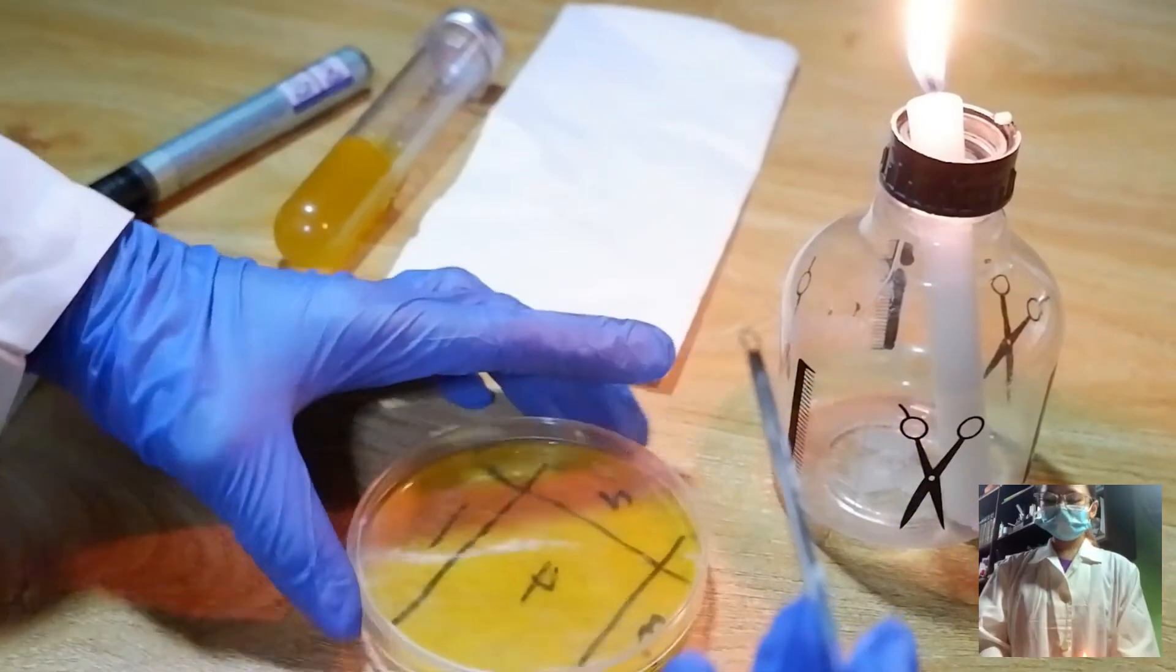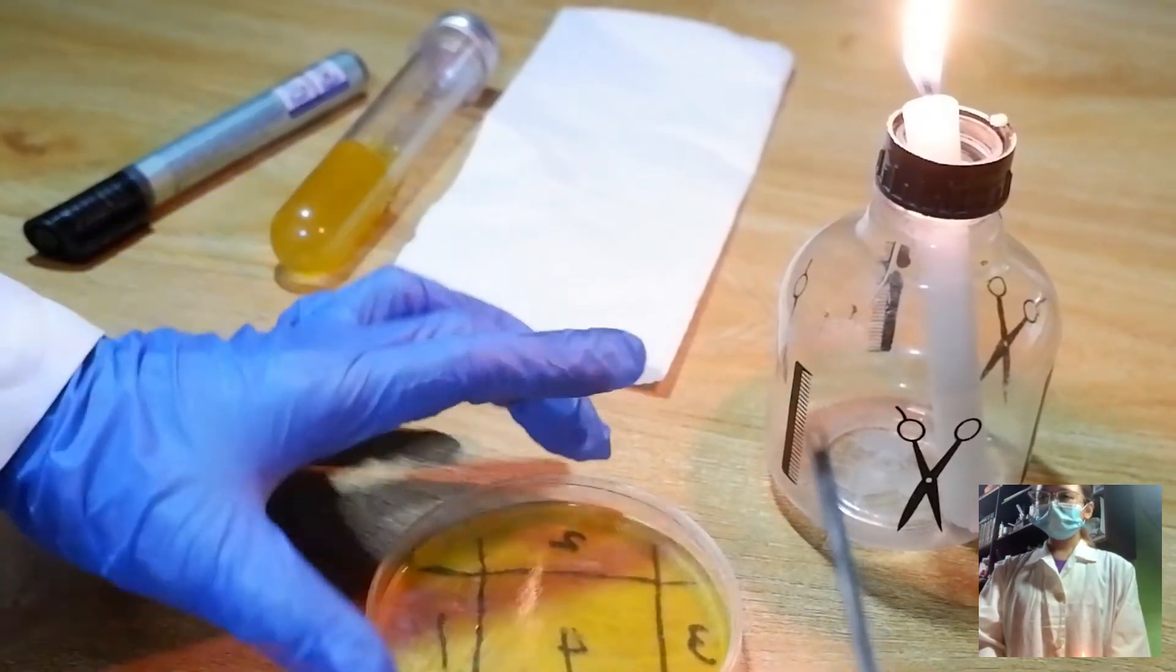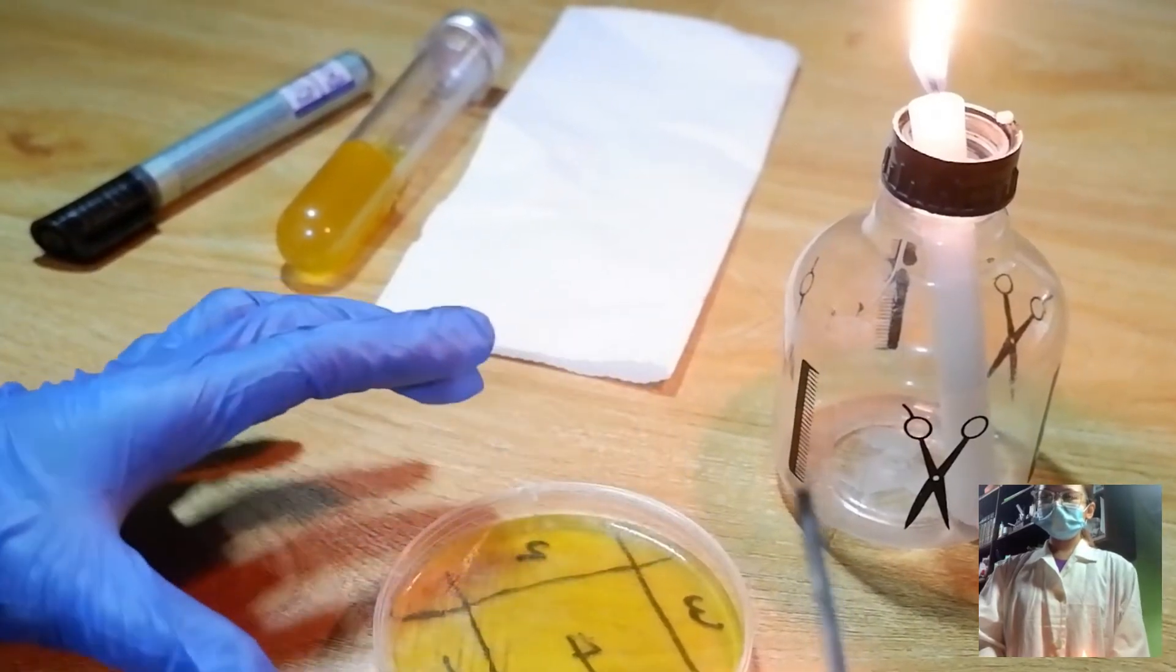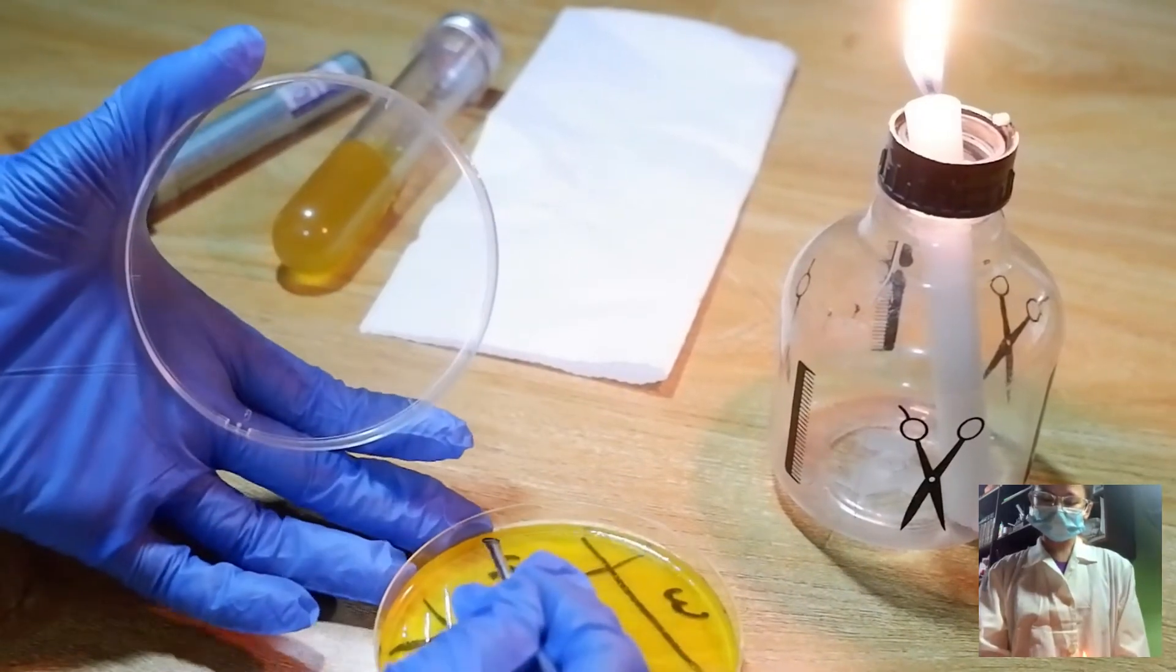Now, we will streak from quadrant 2 to 3. So, rotate it to 90 degrees, and we will streak 6 to 7 from 2.